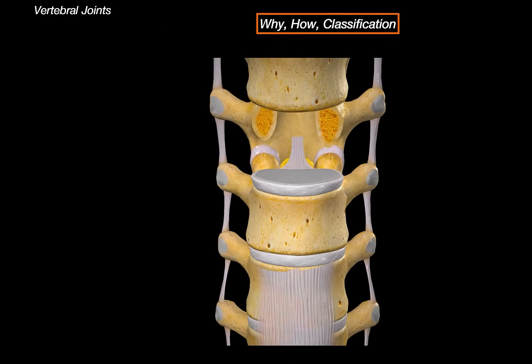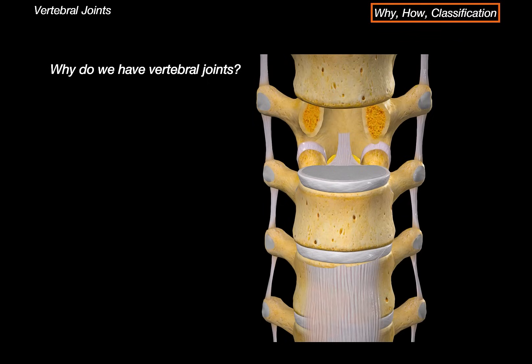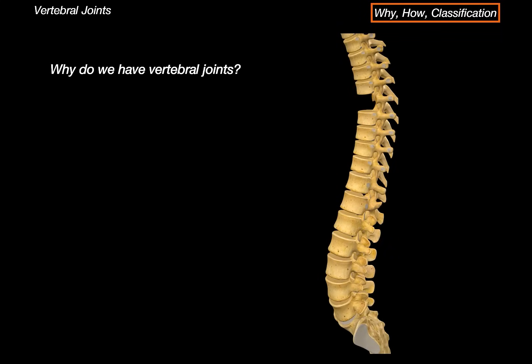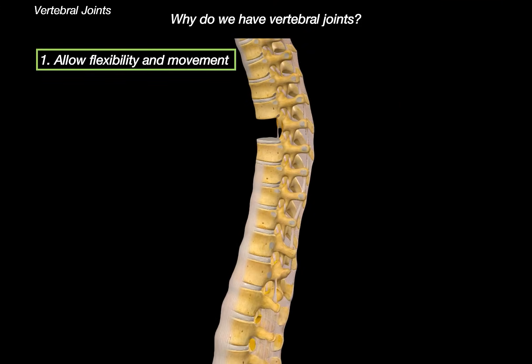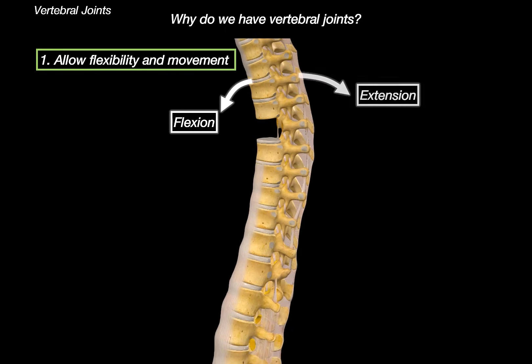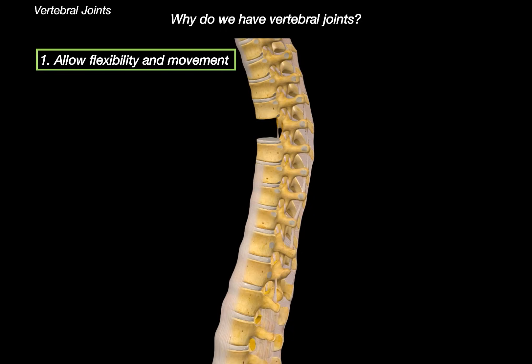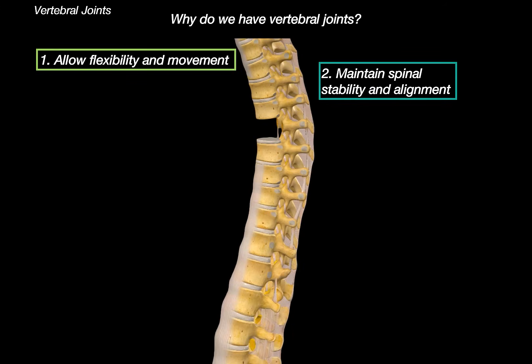Why do we have vertebral joints? If the vertebrae were fused together into a single bone, we wouldn't be able to move properly. The vertebral joints allow flexibility and movement, making it possible for the spine to bend forward in flexion, bend backwards in extension, and rotate along its axis. At the same time, they maintain spinal stability and keep the vertebrae properly aligned, so the spine doesn't collapse under its own weight.